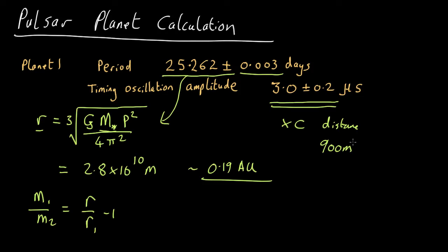So that's a very tiny wobble, 900 meters. My kids walk further than that to school every day. But with the exquisite precision of pulsar measurements, you can actually pick up such a tiny wobble in a pulsar that's hundreds of light years away. It's absolutely staggering.